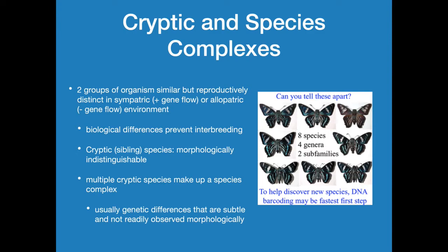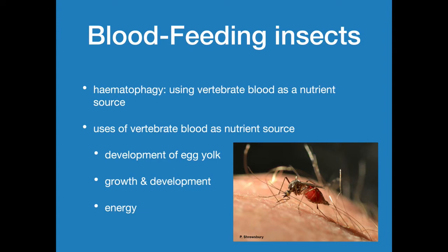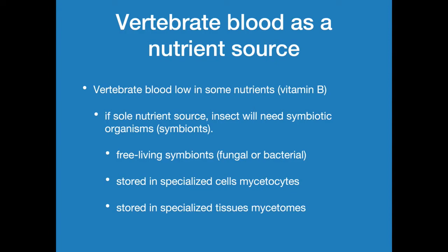The genetic differences between these cryptic species are so minor that sometimes they're not even classified separately. Blood feeding is a mechanism known as hematophagy — where vertebrate blood is used as a nutrient source. Going back to mosquitoes, only female mosquitoes are blood-sucking insects. Male mosquitoes feed on nectar, but females feed on blood only when they are gravid — meaning fertilized and carrying eggs. They use the blood as a high-density nutrient source to feed the eggs. So this blood is used for egg development, for growth and development of nymphs if young are blood-feeding as well, and as a primary energy source.